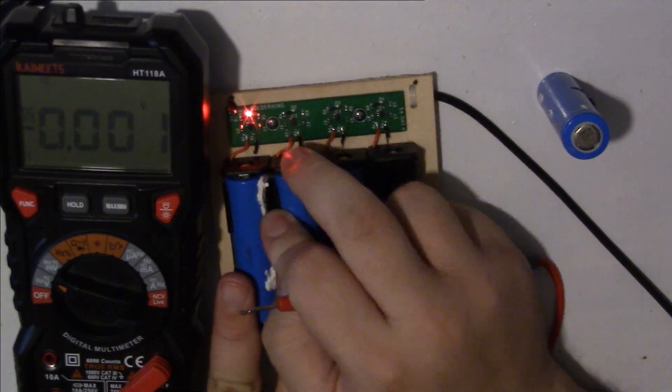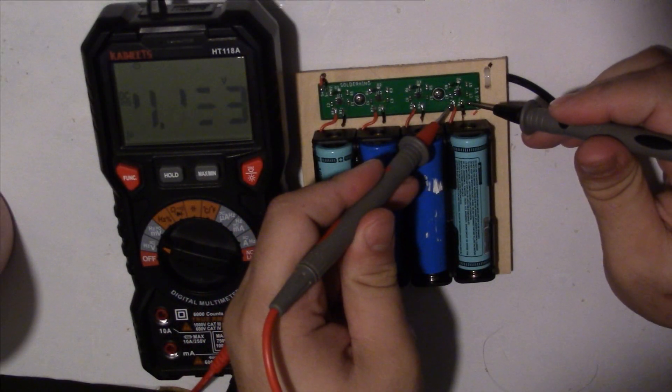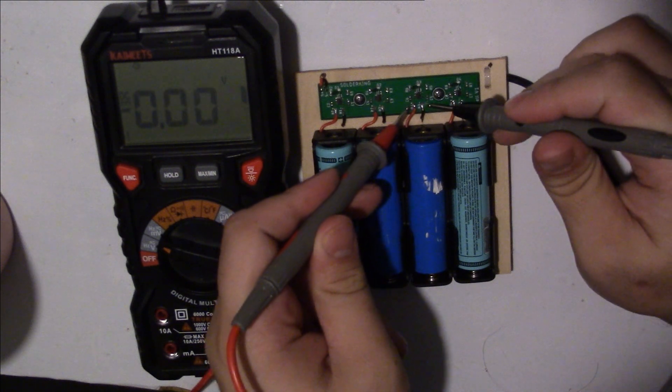I then tested the cell holders with two different cells to rule out a fault in the circuit. They charge just fine so it's more than likely just a bad cell.